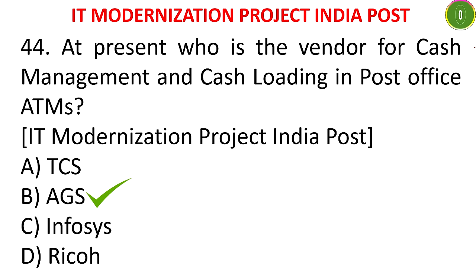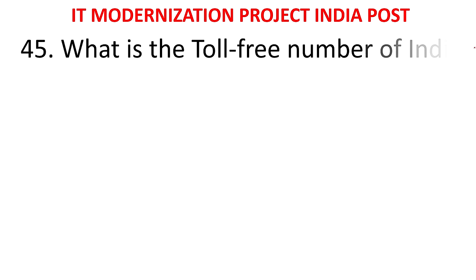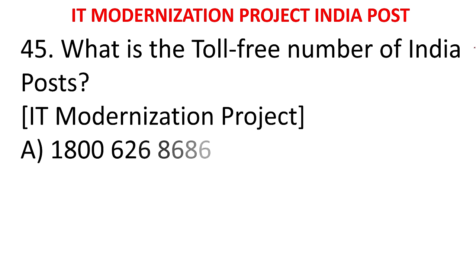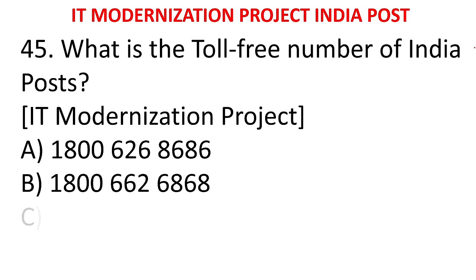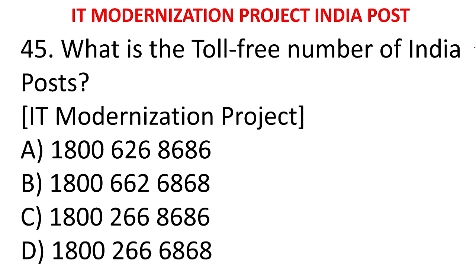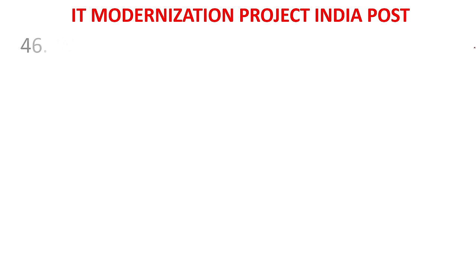AGS takes the cash from the post office only and the postmaster makes an entry in Finacle for taking the amount for loading the ATMs. MCQ 43: What is the toll free number of India Post IT automation project? The answer is 1800-22-6868. MCQ 44: What is the toll free number for ATM and debit card, mobile, internet, and SMS banking related grievances in the Department of Posts IT modernization project? The answer is 1800-425-2440.